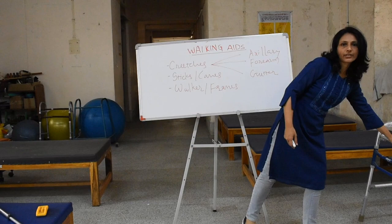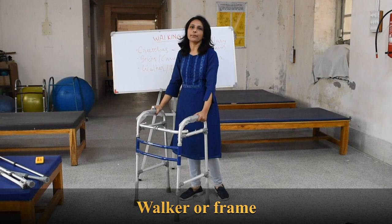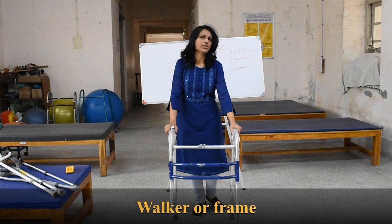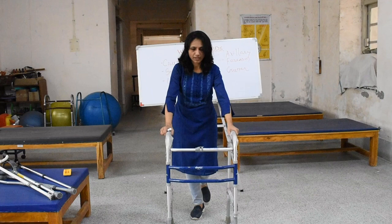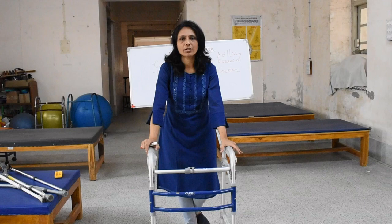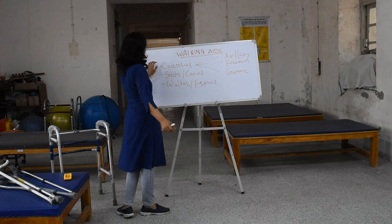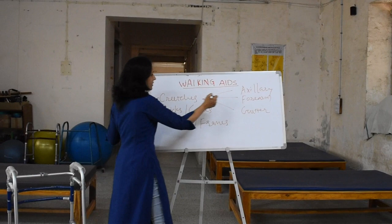This is called a frame or walker. You must have seen somebody using this walker if they have a fracture in the limb and cannot take all the weight from the lower extremity — they are going to use this frame and walk with it. So these are all the types: crutches, sticks, and walker. Each one has its own subtypes. For crutches I have shown you three subtypes: axillary crutch, forearm crutch, and gutter crutch.